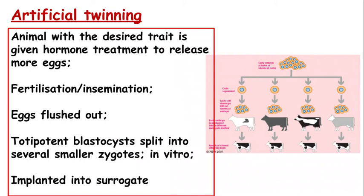We're now going to look at artificial clones. The first thing we need to know about is artificial twinning. This is when we have a particular organism with a desired trait — for example in cattle that might be a good milk yield or a high proportion of muscle or meat. The animal with the desired trait is given hormone treatment to release a lot more eggs, which are then fertilized through artificial insemination and flushed out of that individual.